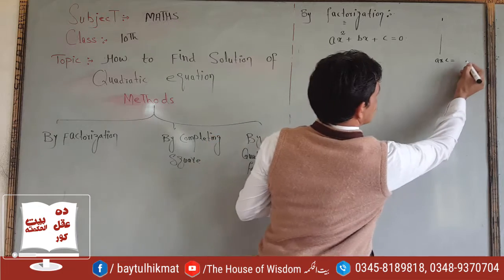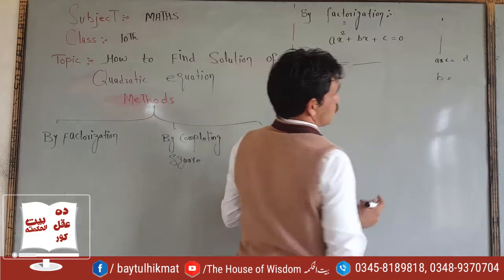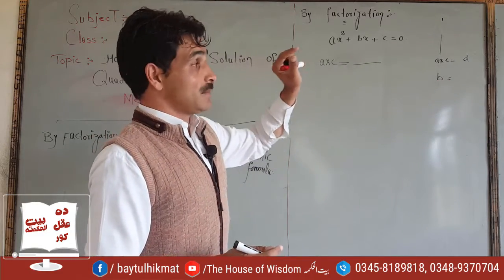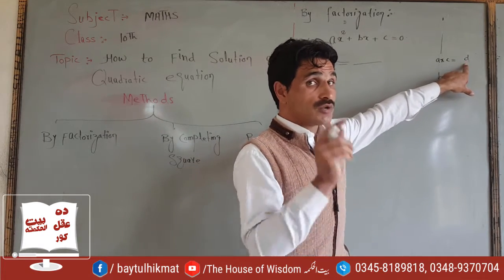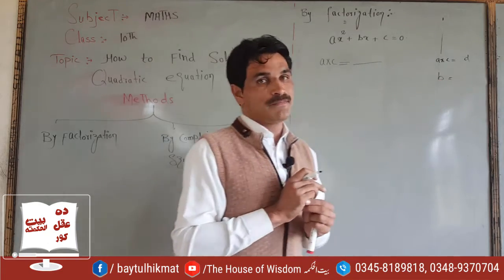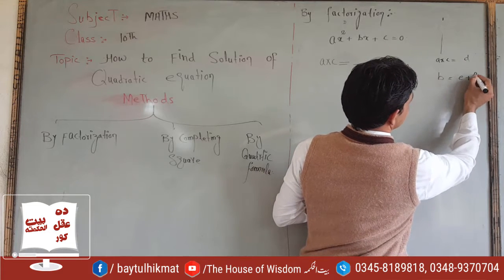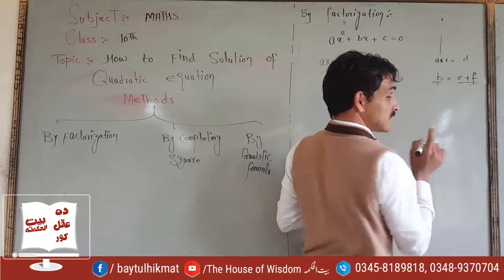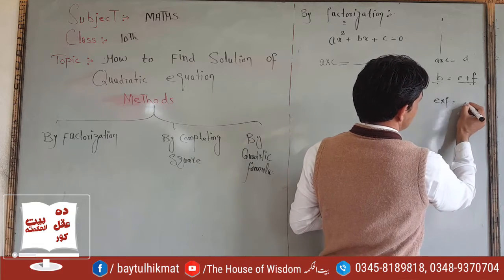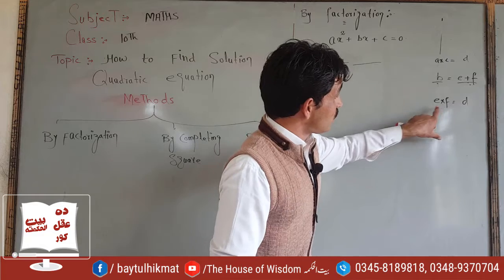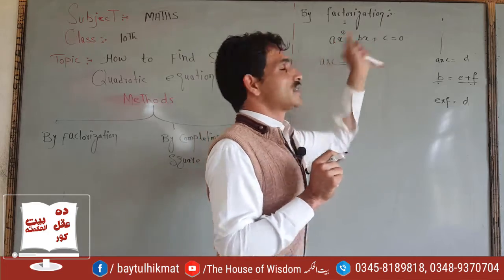In factorization, the x squared coefficient a is multiplied by the constant c to get a product, call it d. Then we find two numbers e and f such that e plus f equals b (the x coefficient) and e multiplied by f equals d.